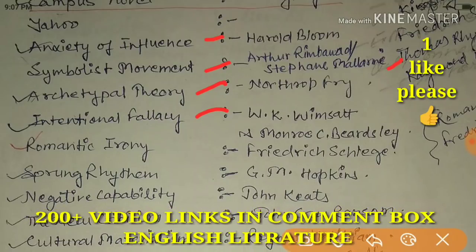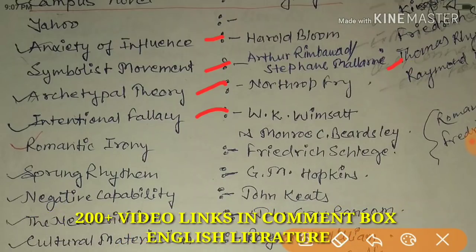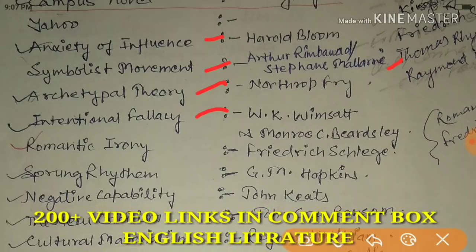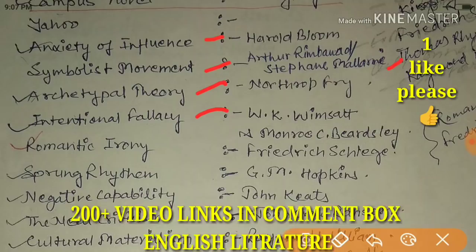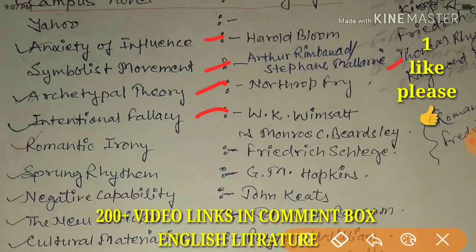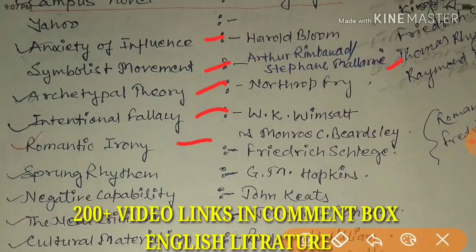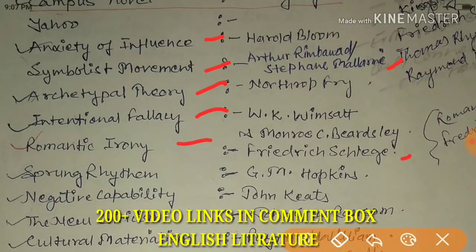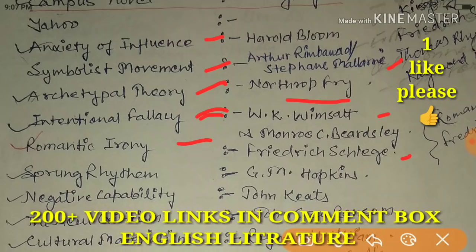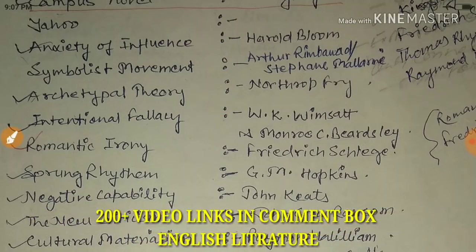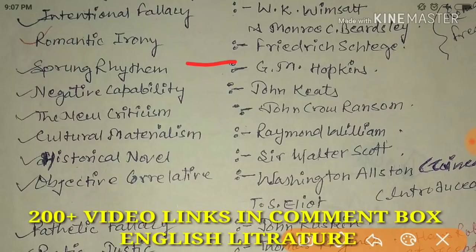I have made a video with shortcuts for lots of literary terms, so you can check that on my channel. 'Romantic Irony' is by Friedrich Schiller. 'Intentional Fallacy' is by W.K. Wimsatt and Monroe C. Beardsley. 'Sprung Rhythm' is by G.M. Hopkins.